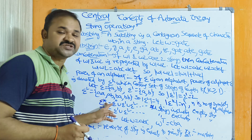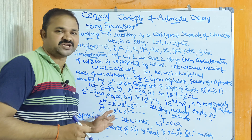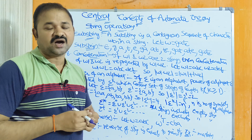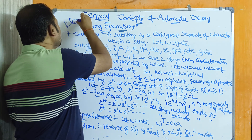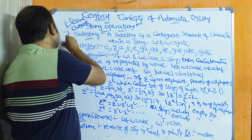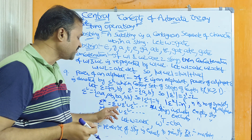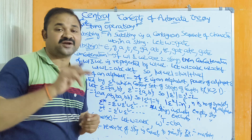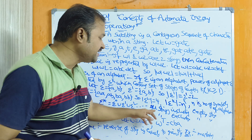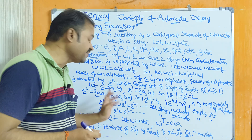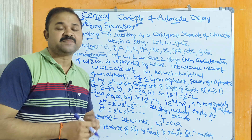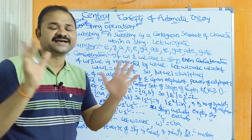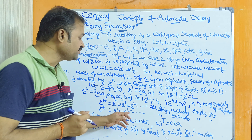The next operation is sigma power star, also called Kleene closure or star closure. Sigma star equals sigma^0 union sigma^1 union sigma^2 and so on. Sigma^0 gives the empty string epsilon, so sigma star contains all strings including the empty string. Sigma power plus is called positive closure. It does not contain epsilon, so sigma plus equals sigma^1 union sigma^2 and so on.